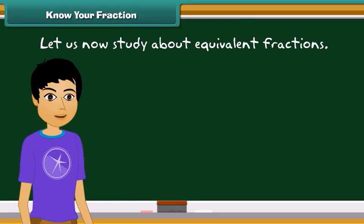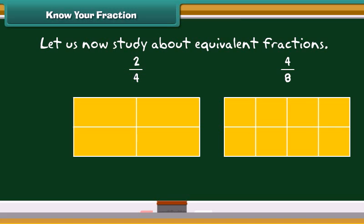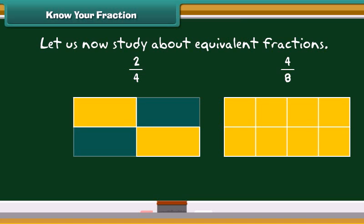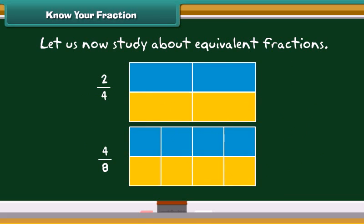Let us now study about equivalent fractions. Look at the rectangular boxes given below. In the first figure, two by four boxes are blue, while in the second figure, four by eight boxes are blue. Observe carefully — the blue colored parts of both the boxes are the same. This means two by four must be the same as four by eight. So, two by four and four by eight are equivalent fractions.